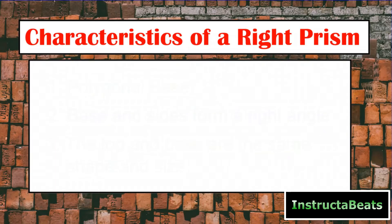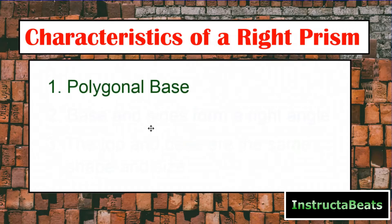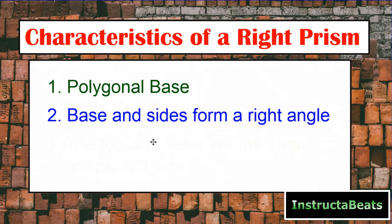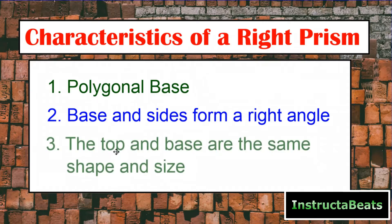There are a few characteristics of a right prism you need to know. One, it has a polygonal base. Two, the base and sides form a right angle or are perpendicular. And then here's the big one: the top and the base are the same shape and size. So if you're doing a rectangular prism, the top and the bottom would be a rectangle. If you're doing a cube, the top and bottom would be a square. If you're doing a triangular prism, the top and bottom are going to be the same exact triangle. This is a huge characteristic that we're going to be using today.